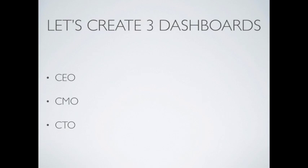Now let's get ready to create three dashboards. We are departmentalizing the organization — creating three dashboards for three departments. The first is the CEO department, which also implies CXOs or top management. The second dashboard goes to the CMO, the Chief Marketing Officer, or the marketing team. The third is for the tech and design team — the CTO department — with metrics and dimensions around tech and design.